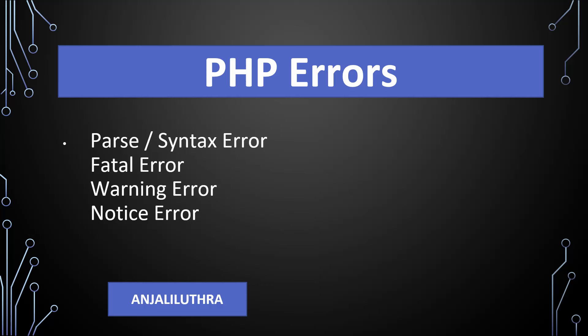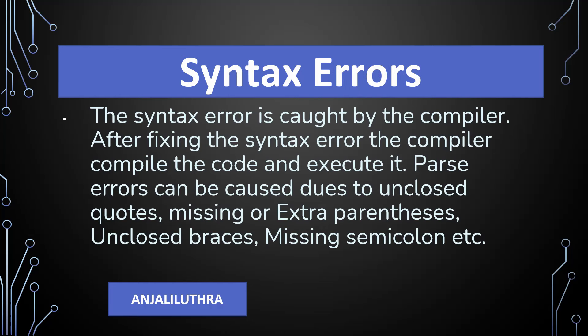Syntax errors occur where you have not followed the syntax of your language — that means you don't follow its grammar. Where you had to put a semicolon, you didn't put it. Where you had to put brackets, you didn't put them. If there is a syntax error, the compiler doesn't run your program. When there is a syntax error, we cannot execute our code. Syntax error is caught by the compiler. After fixing it, the compiler compiles the code and executes it.